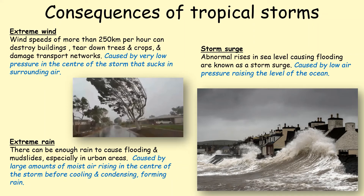The consequences of tropical storms — we're going to concentrate on three. The extreme wind speeds can go at over 250 kilometres per hour. You can get torrential rain that causes flooding and mudslides. And finally we get storm surges, which bring waves that are up to 10 metres in height and can flood the surrounding areas. The low air pressure helps to raise the level of the ocean.